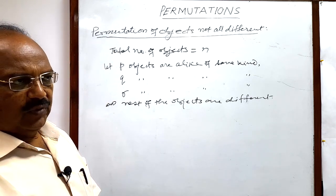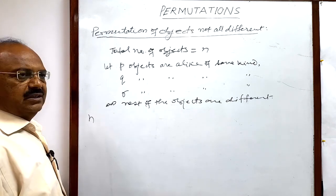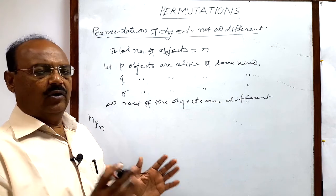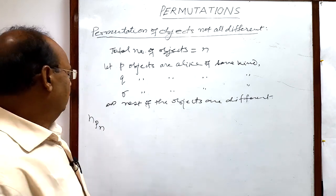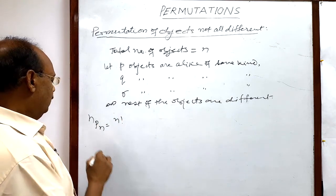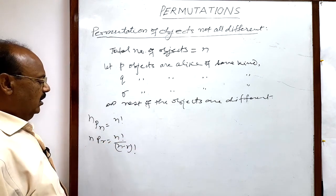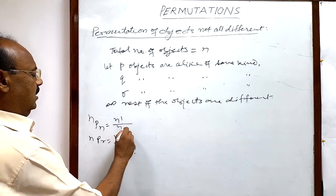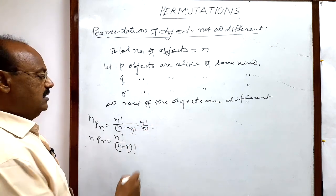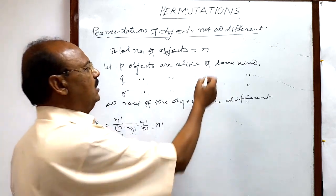We have already discussed previously that if total number of objects is n and we have to arrange all n objects, and all the objects are of different kind, then the number of permutations is n factorial. The formula is nPr = n! / (n-r)!, which gives n! / 0! = n! since 0! = 1.